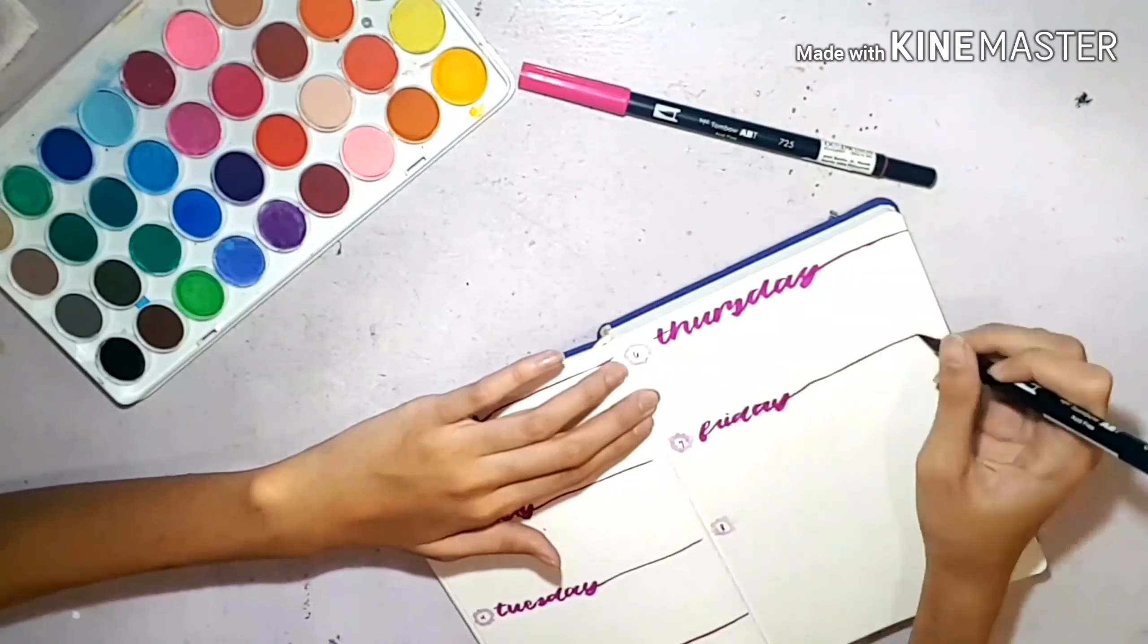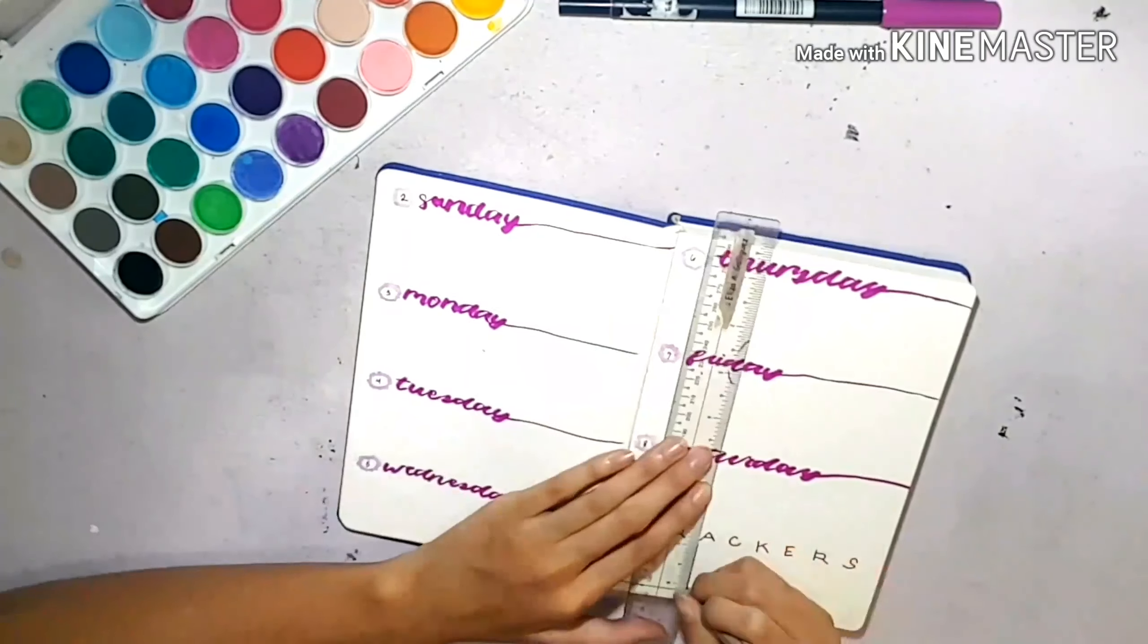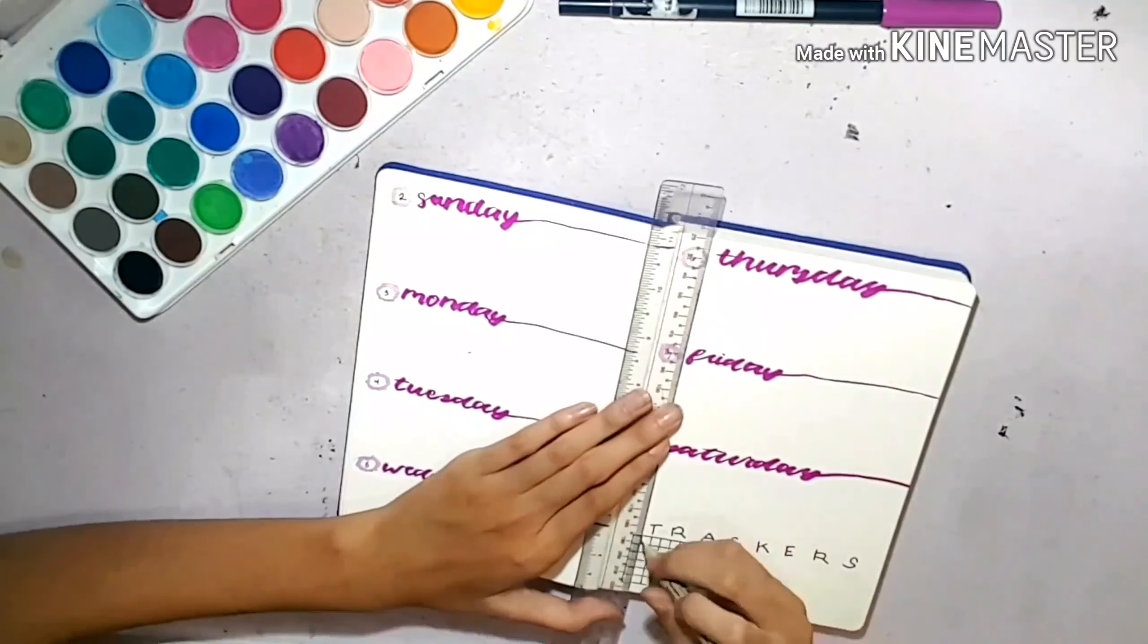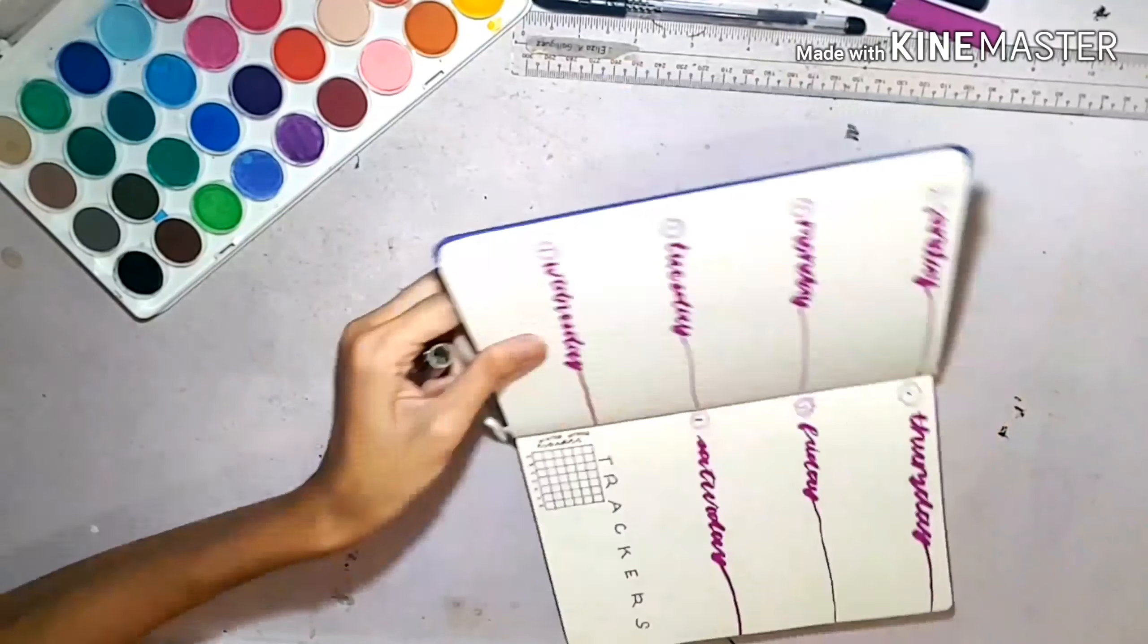Since there's only seven days I put some trackers on the bottom of the last page. This is my water intake tracker and my sleep tracker which I am still keeping on weekly.